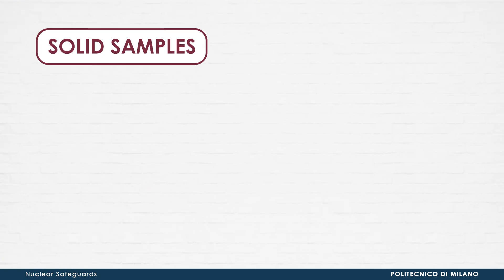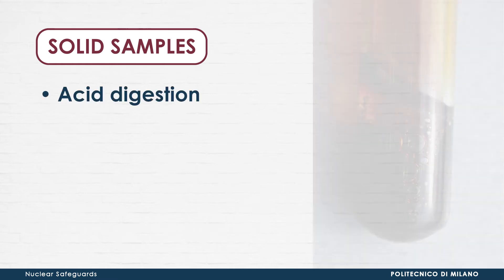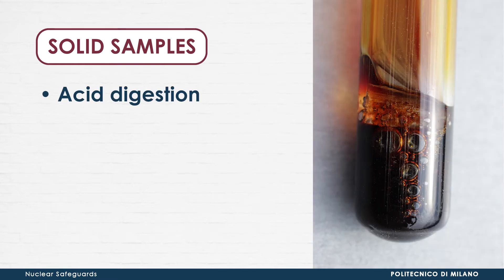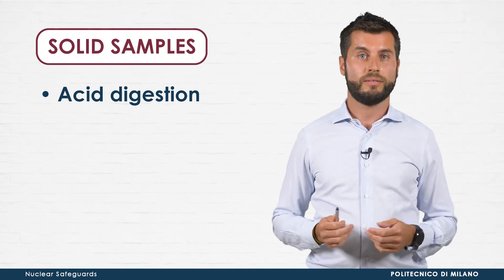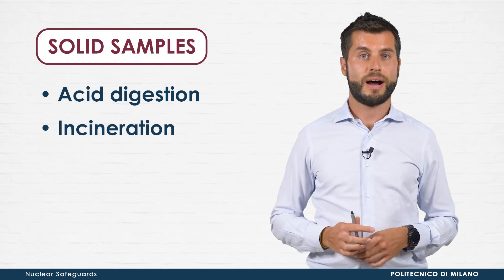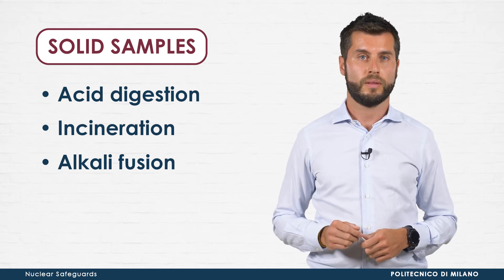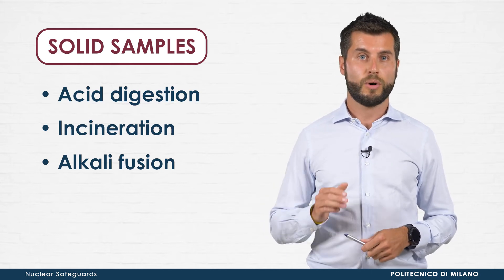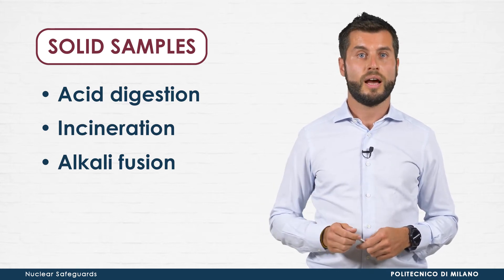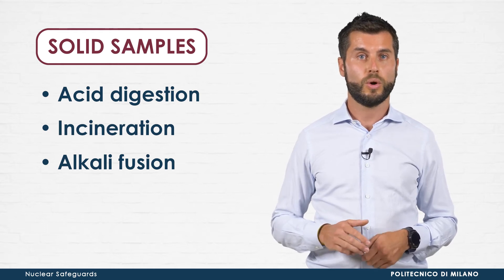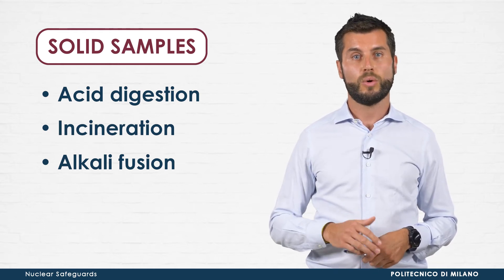When a solid sample is concerned, other methods can be exploited, such as acid digestion. In this case, the matrix is dissolved by a proper mixture of acids, often with the help of a heat source like hot plates or microwave ovens. Alternatively, the sample can undergo incineration in a muffle furnace or alkali fusion to destroy the organic matrix. In all these cases, both ashes and solid residues are then dissolved by a proper leaching solution to recover the analyte of interest into a homogeneous solution.